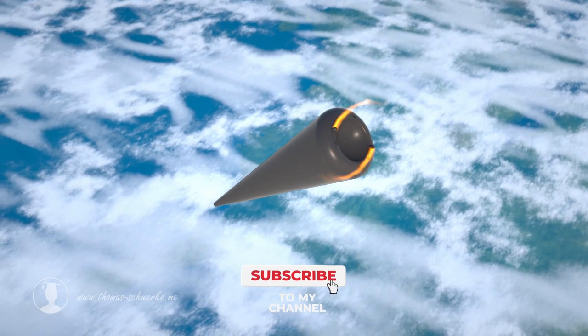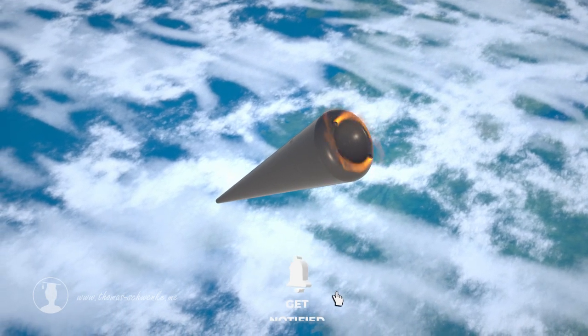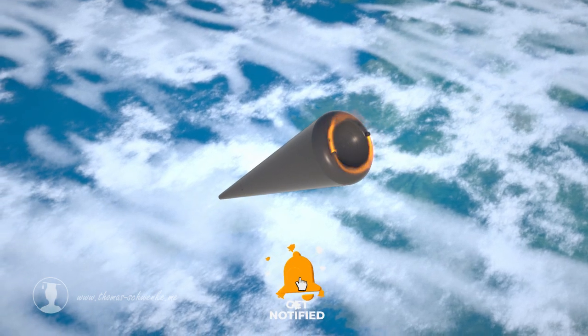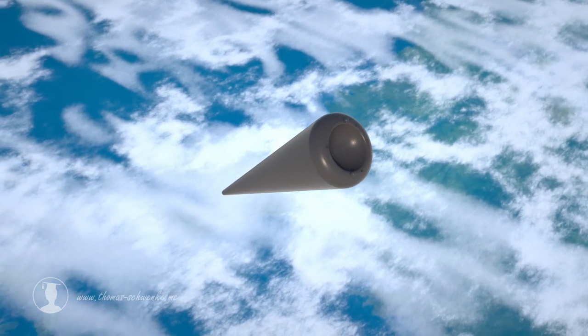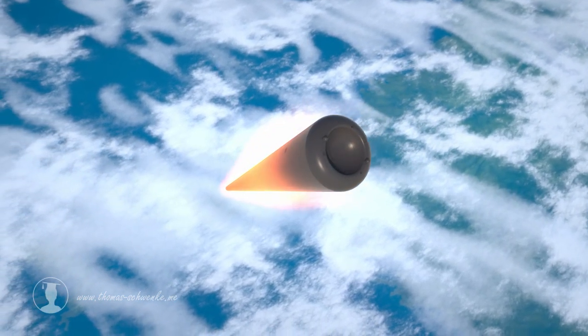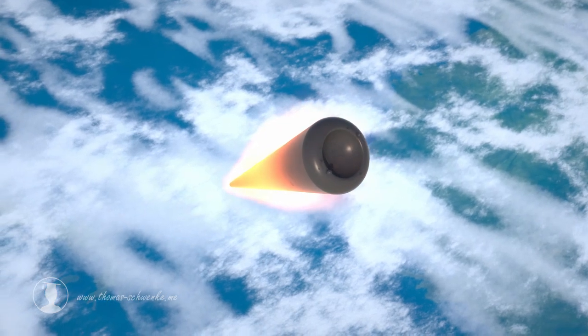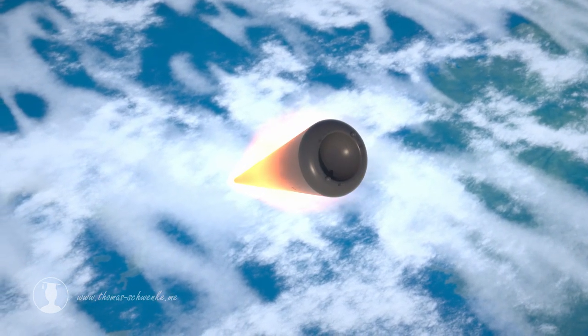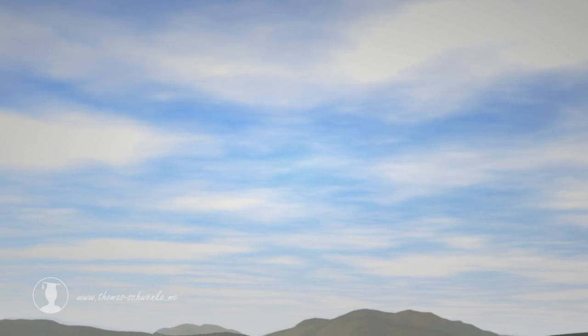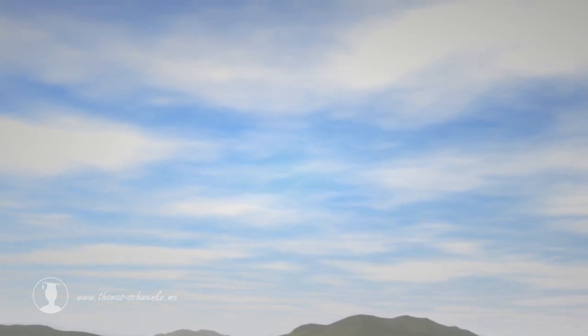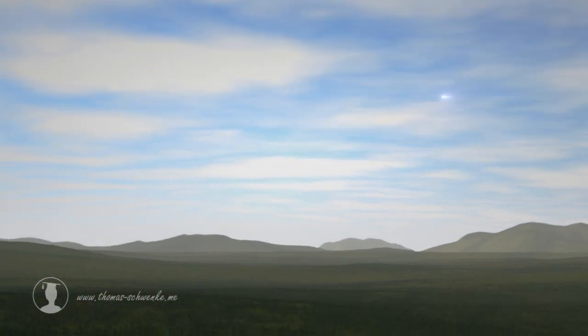After the warhead has been decoupled, it is rotated for trajectory stabilization. The friction of atmospheric particles causes the warhead to generate a lot of heat when it enters the atmosphere. The warhead hits its target with a speed of more than two miles per second and explodes.